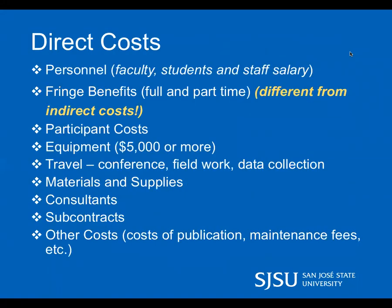Common direct cost categories include: personnel, fringe benefits — which is calculated into your direct costs even though it's sometimes confused with indirect costs — equipment, and travel.